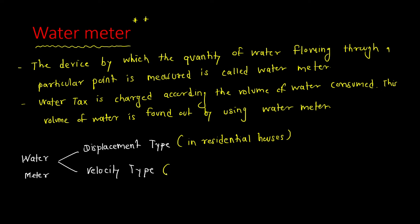The velocity type water meter is used for measuring the supply in industries and factories. The displacement type measures small flows, while the velocity type is generally used to measure large flows. In industries and factories, the flow of water required is large, so based on the velocity, we are able to find out what volume of water is consumed.